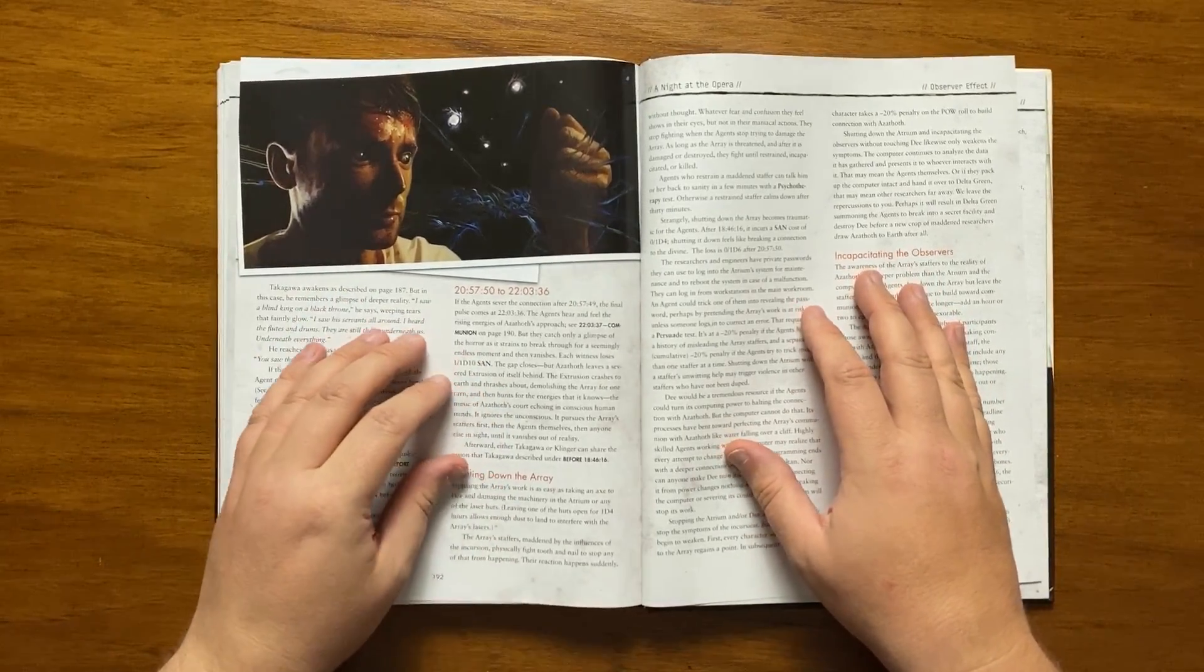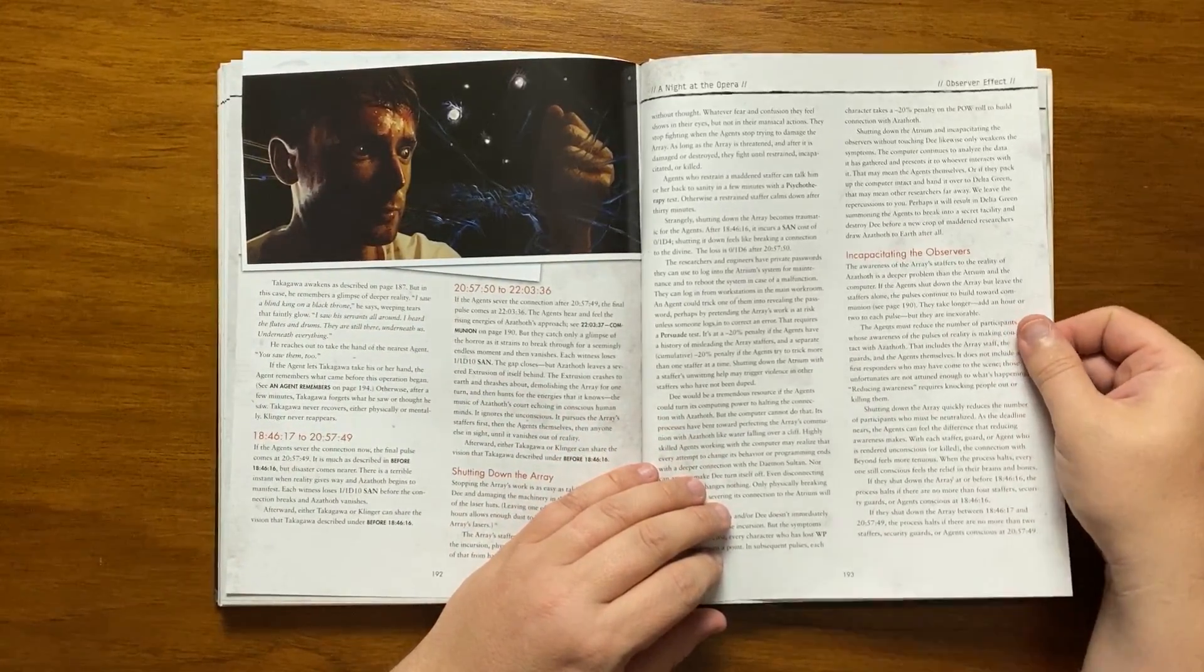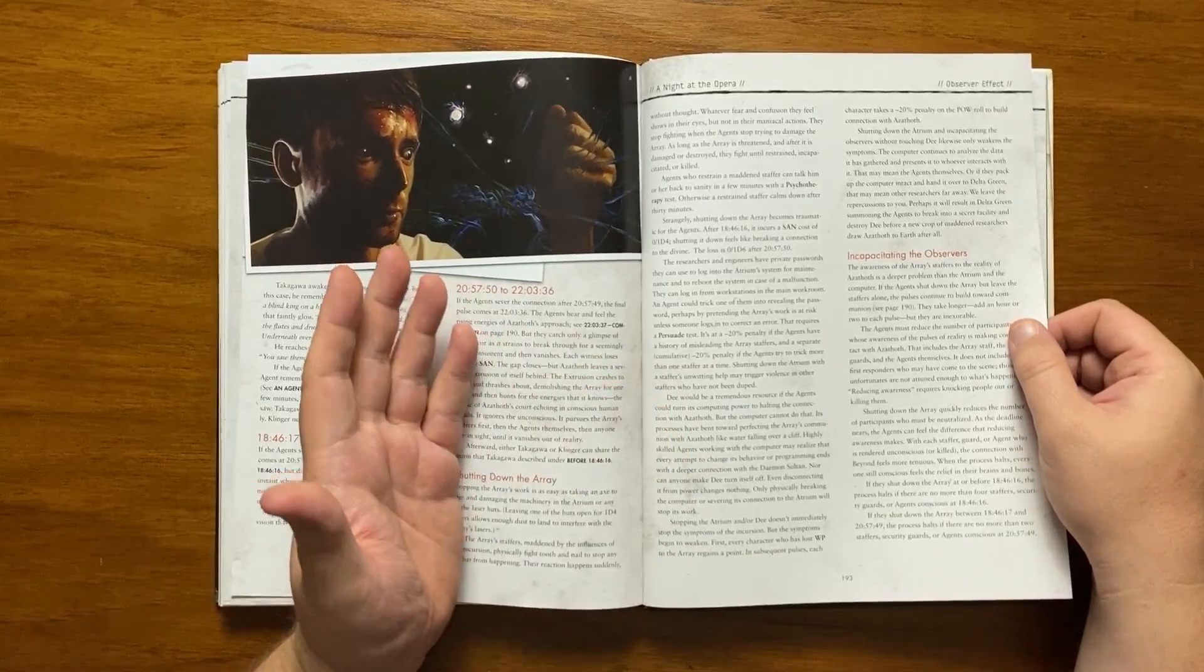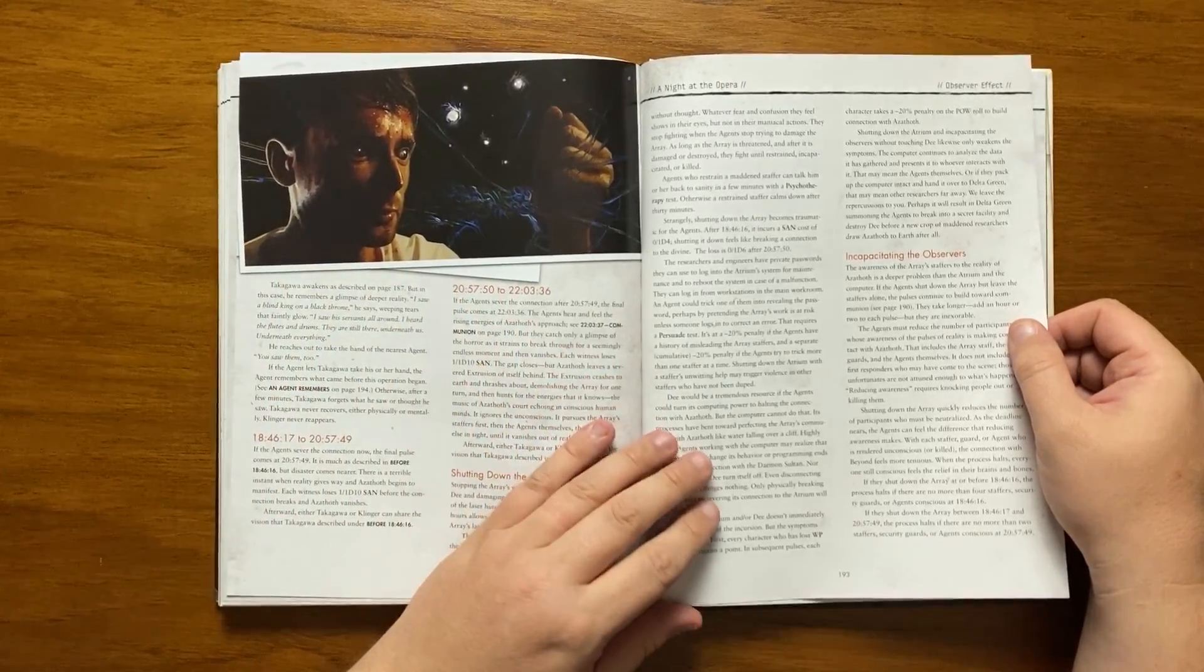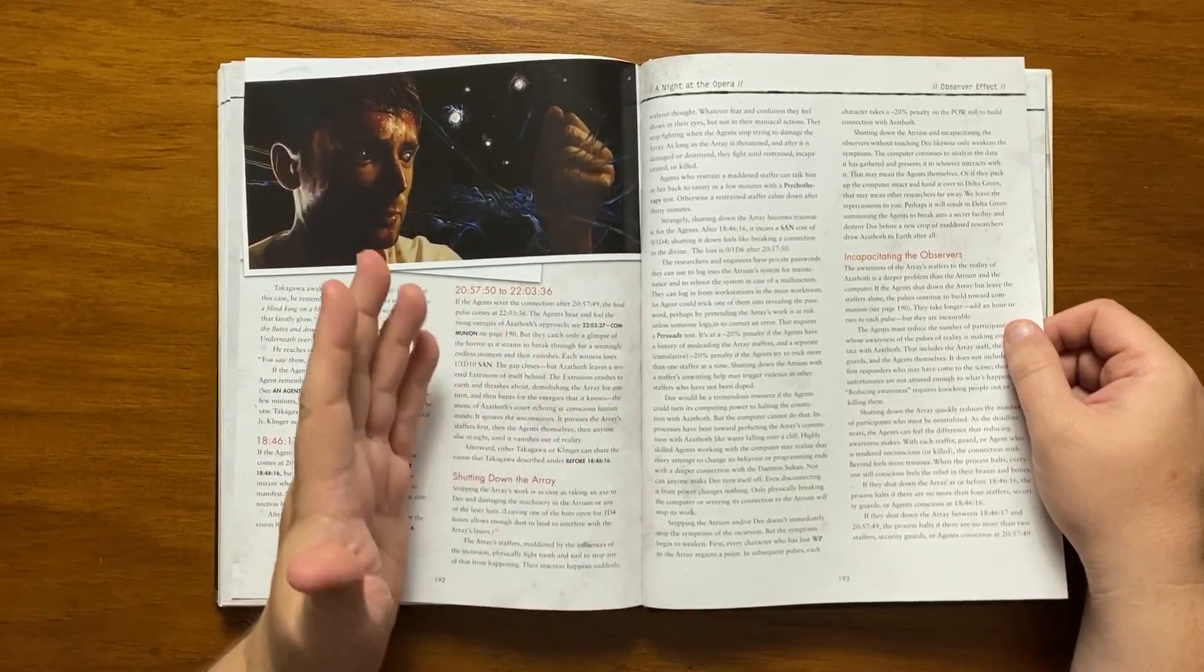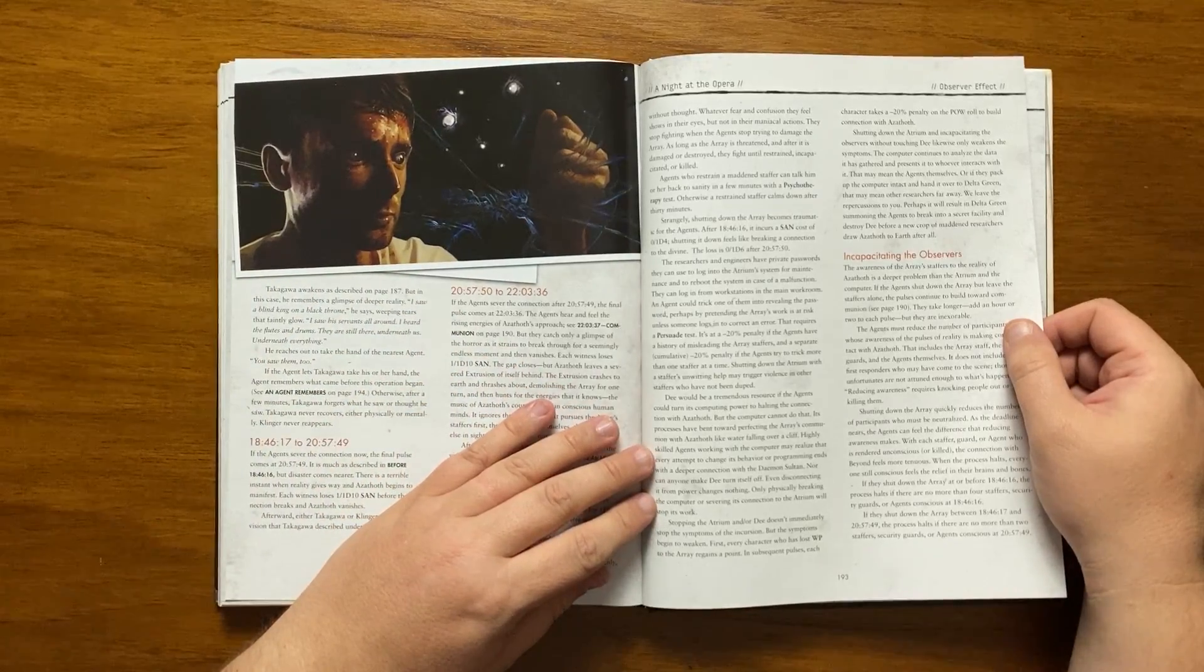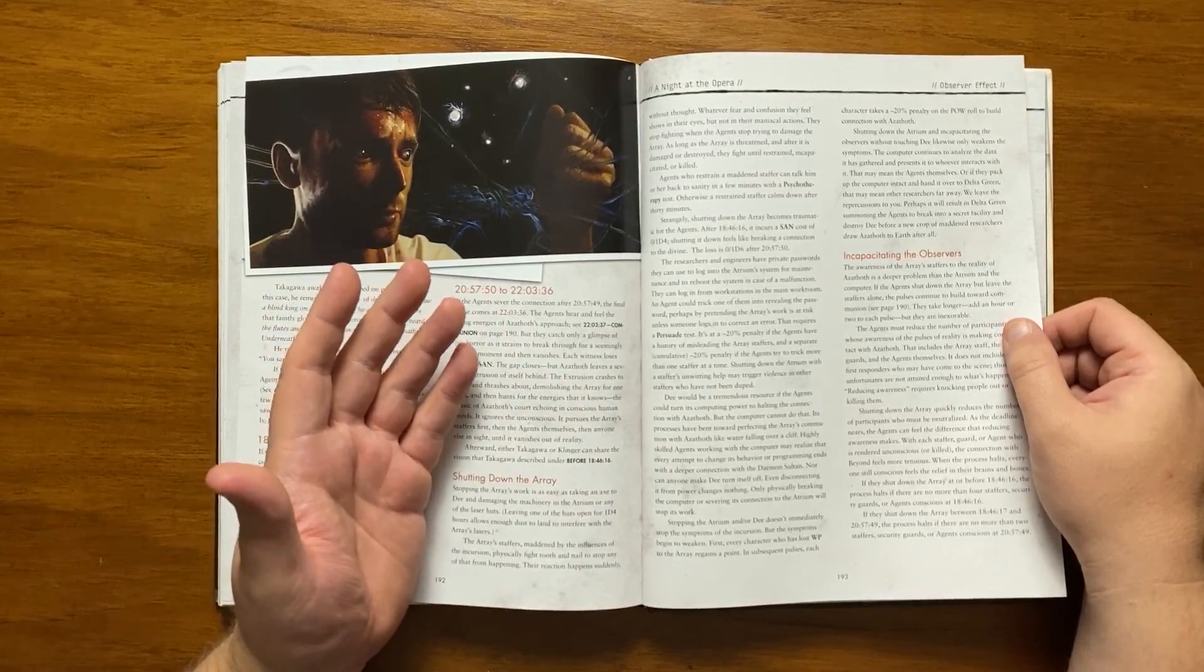The easy way for the agents to shut down the array is as simple as smashing D and damaging the atrium machinery. This maddens the staff there and they will physically fight the agents to stop this. They will instantly stop fighting should the agents stop trying to damage the array. Restrained staff can be talked back to sanity in a few minutes. Shutting down the array is traumatic to the person doing it as it feels like breaking a connection with the divine and San is lost. The staff here have private passwords in order to log into the atrium systems for maintenance and can be persuaded to shut down the atrium, though this may trigger violence from the others. D cannot halt the connection to Azathoth as it has bent its own processes to be able to achieve communion. Disconnecting D from the power does nothing, only destroying it or severing its connection to the array will work. This will not stop the incursion as such, only weaken them to begin with. D will continue to analyse data and presenting it to those who interact with it.